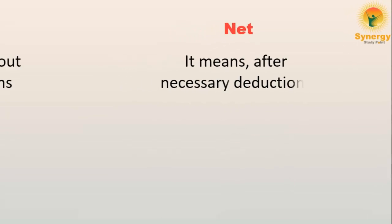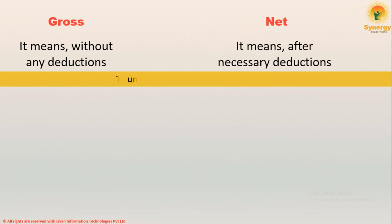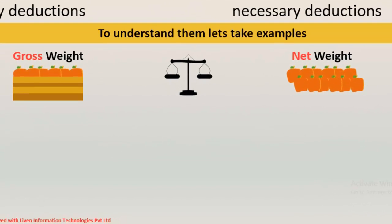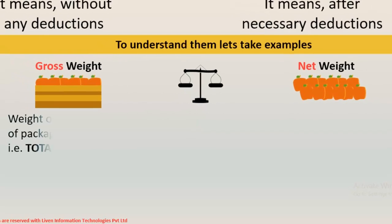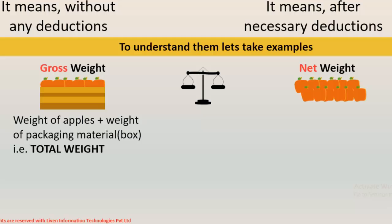To understand them, let's take the example of gross weight and net weight. Imagine you are buying a box of apples. As a customer, you pay by the weight of the apples — 1 kg or 2 kg. It doesn't make sense to buy apples by the weight of the entire box. So gross weight is the weight of the apples plus the weight of the packaging material, that is, the box — it refers to the total weight.